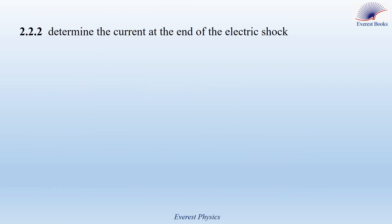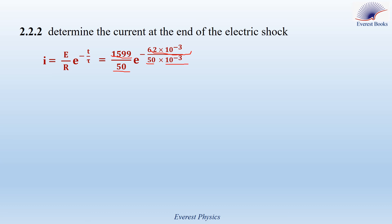Determine the current at the end of the electric shock. Using the discharge current expression I = (E/R)·e^(−t/τ), substituting E = 1810 V... with UC at T1 equal to 1599 volts, R = 50 ohms, T = T1 = 6.2 × 10⁻³ s, and τ = RC = 50 × 10⁻³ s, the current at the end of the electric shock is I = 28.25 amperes.